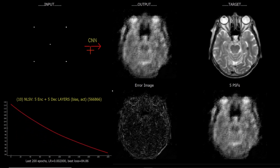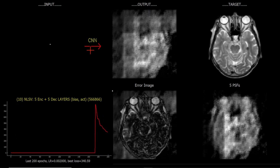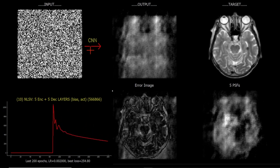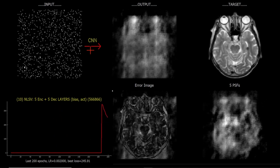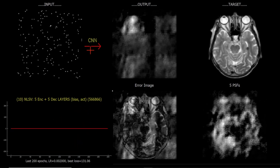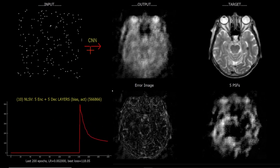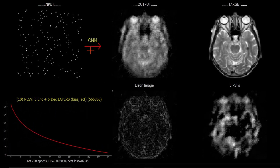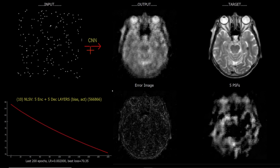What I can finish with is going to the random noise, making it a bit sparser, to give it a bit more of a challenge. We can see that this network has clearly got no problems at all, given its high number of parameters.